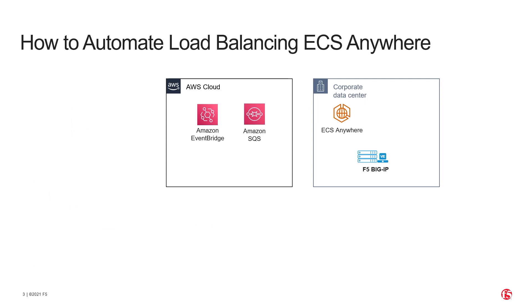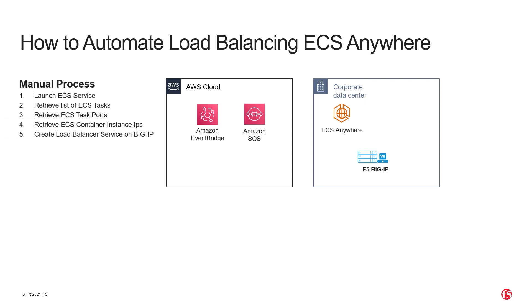When load balancing ECS Anywhere, there are two different ways that we can configure a Big IP to provide these services. The first method is to use a manual process. You would start by first retrieving the list of ECS services that you'd like to load balance, then retrieve the list of ECS tasks associated with that service, the list of ports, the IP addresses of the container instances, and finally create the load balancer service on the Big IP itself.